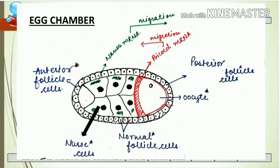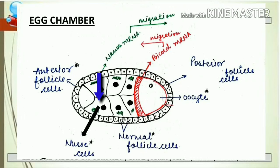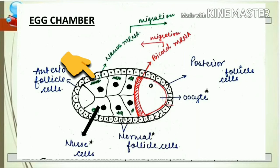This is a diagram of an egg chamber or oocyte. You can see the anterior follicle cells and posterior follicle cells. The white area with black dots is the nurse cell, which has the property to nourish the egg — whatever important nutrients are required by the oocyte are provided by the nurse cell. The red shaded area is the location of bicoid mRNA synthesis and the green portion is for nanos mRNA synthesis.